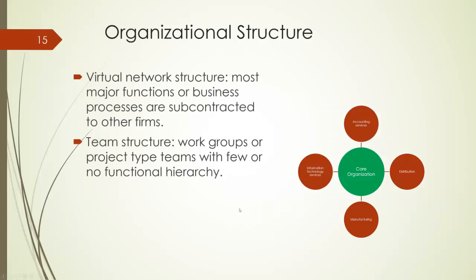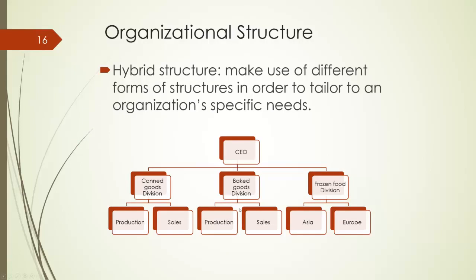A virtual network structure means that the firm subcontracts most of its major functions to separate companies and coordinates their activities from a small core organization, as shown here. A team-based structure is where the entire firm is made up of teams that coordinate their work activities to accomplish the firm's goals and objectives. Lastly, a hybrid structure makes use of different forms of structures. The firm is divided into three divisions where canned and baked goods divisions are organized by function, and frozen food division is organized by geographic locations. Most large firms use different forms of hybrid structures in order to tailor to their particular needs.